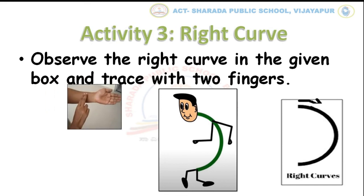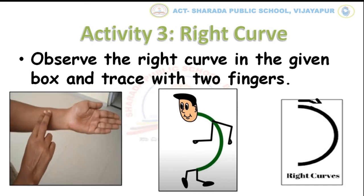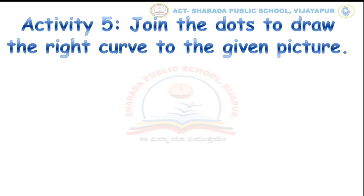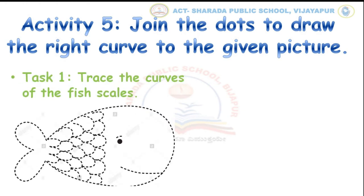Also, trace the curves on your hand as shown in the picture. So kids, let us move to the fifth activity — trace the right curve and color the fish. Kids, in this activity, trace the dotted right curves on the fish and complete this activity as shown here.